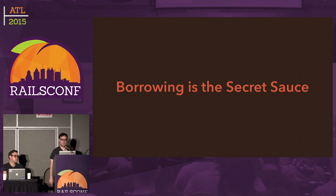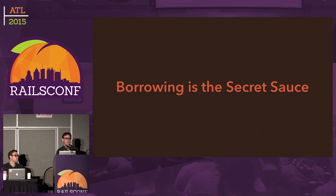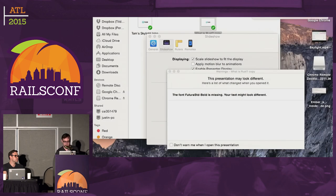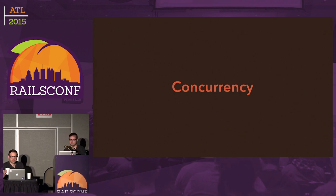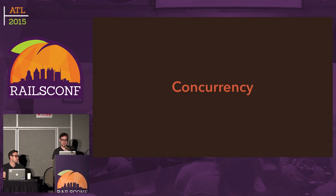I'm going to skip the closures section, but the TLDR is that closures follow the same rules as regular ownership. If you're using a closure and it closes over a variable, it ends up having the same rules. If you pass a closure to another function and that function tries to call it multiple times, that would violate ownership rules and gives you an error. You can learn more about that in the Rust book.